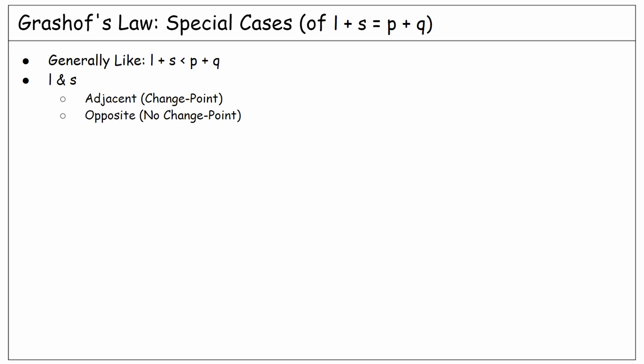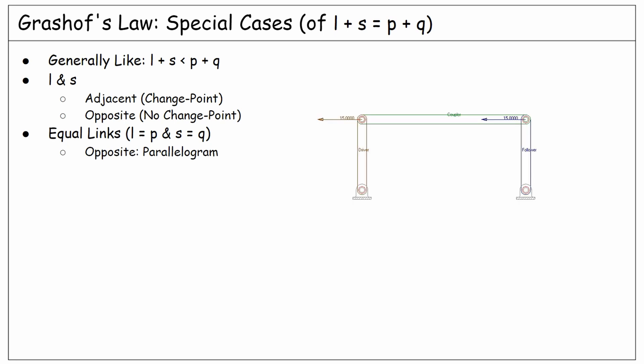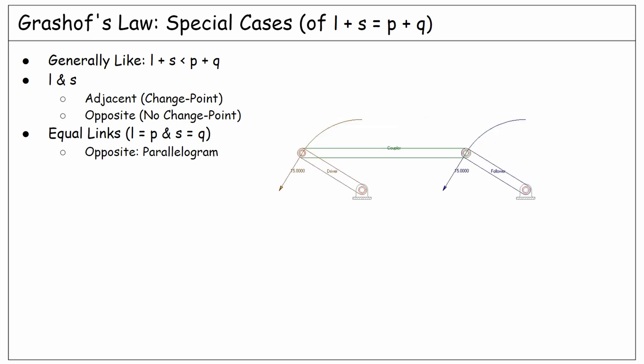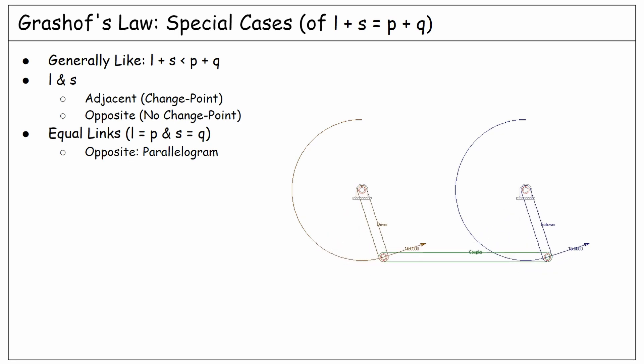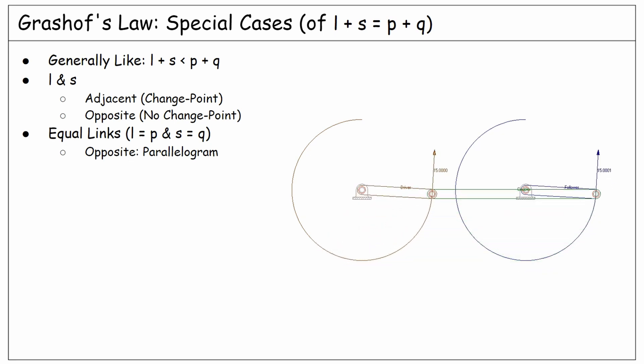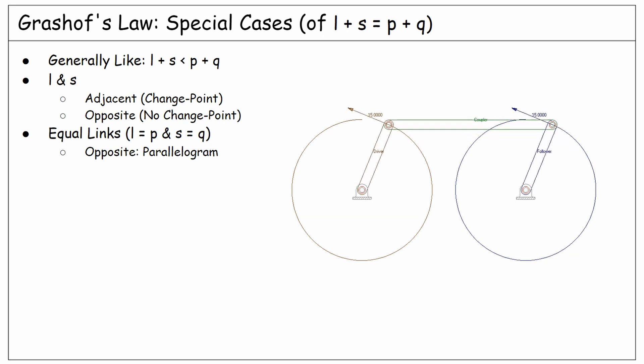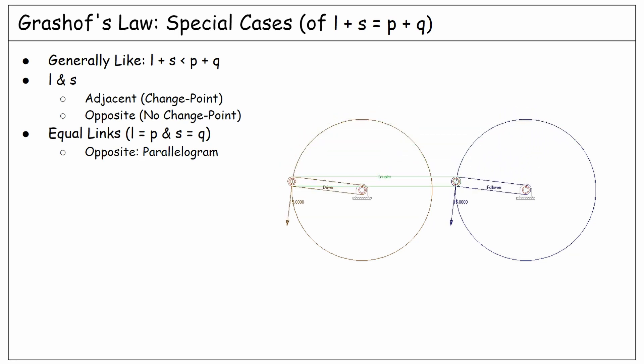The next sub-case is when each of the longest and shortest is equal to one of the other two links. In that case, if the equal links are opposite, we might have a crank-crank linkage known as a parallelogram, where the follower rotates at a constant speed. But we should also notice that since in this case the longest and shortest links are adjacent, the change point might happen.